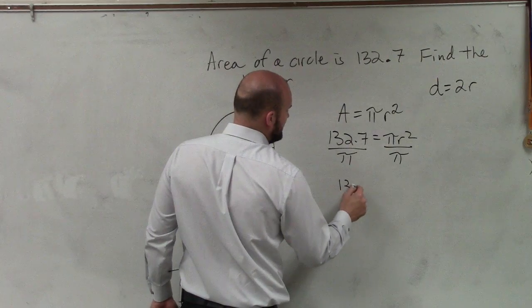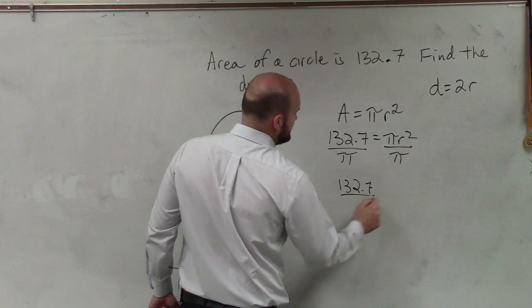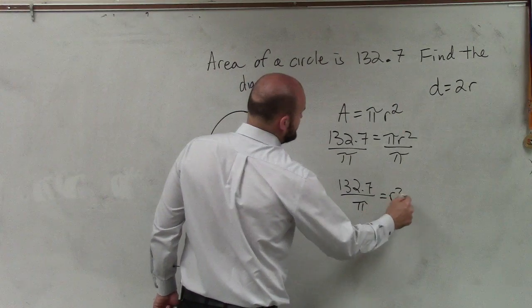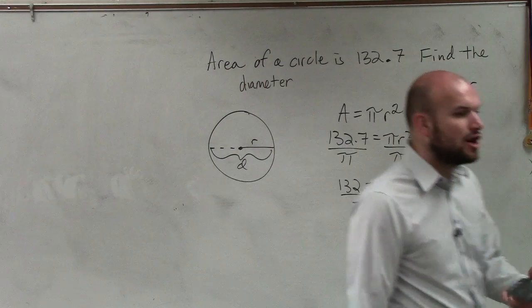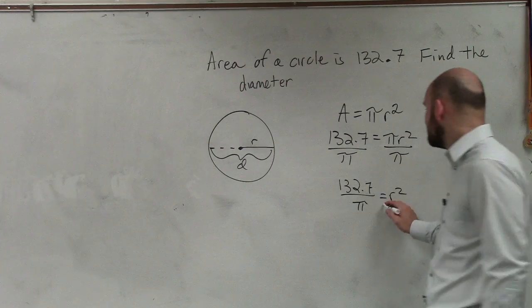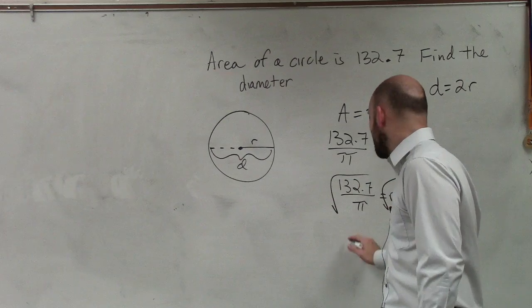Therefore, I have 132.7 divided by pi equals r squared. I need to solve for r, not r squared. So to do that, I need to take the square root of both sides.